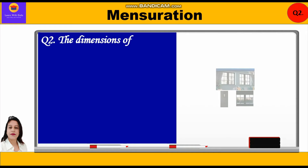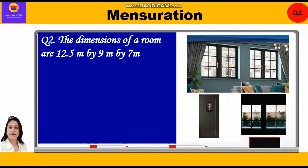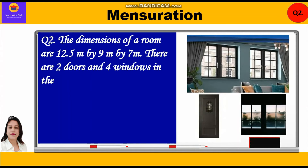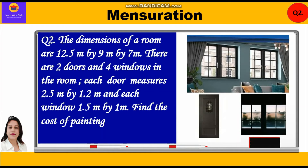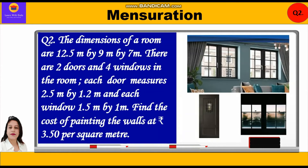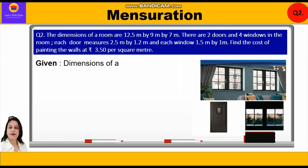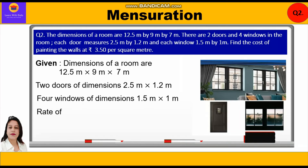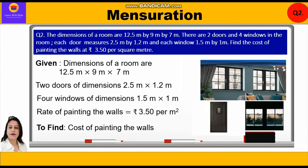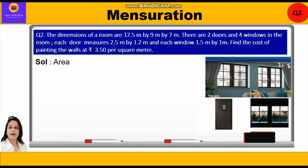Question number two: The dimensions of a room are 12.5 m × 9 m × 7 m. There are two doors and four windows. Each door measures 2.5 m × 1.2 m, and each window measures 1.5 m × 1 m. Find the cost of painting the walls at rupees 3.50 per meter square. Given: room dimensions 12.5 m × 9 m × 7 m; two doors of 2.5 m × 1.2 m; four windows of 1.5 m × 1 m; rate of painting rupees 3.50 per meter square.